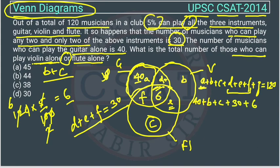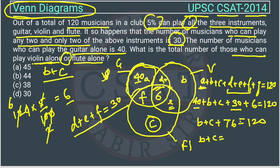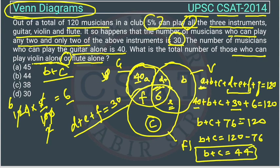So putting it all together: B + C + 40 + 30 + 6 = 120, which gives B + C + 76 = 120. Moving 76 to the other side: B + C = 120 − 76 = 44. So the answer is 44, which corresponds to option B.